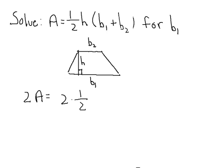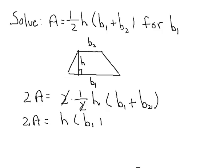So we have 2 times one half times h times b sub 1 plus b sub 2. So on the left-hand side, we have just 2A. Now you notice on the right-hand side that the 2 times one half will cancel and we're left with h times the quantity b sub 1 plus b sub 2.